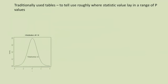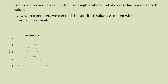Traditionally, we used tables to tell us roughly where the statistic value lay in a range of p-values — we'd look it up and say that t-value means the p-value must be less than 0.005 or less than 0.1. But now with computers we don't need that method; we can find a specific p-value for a particular t-value, or do it the other way around.